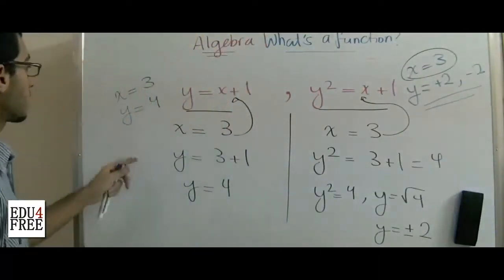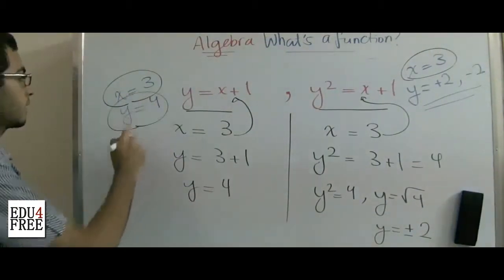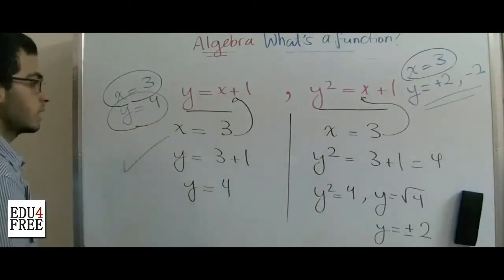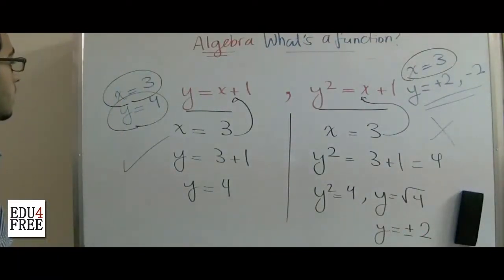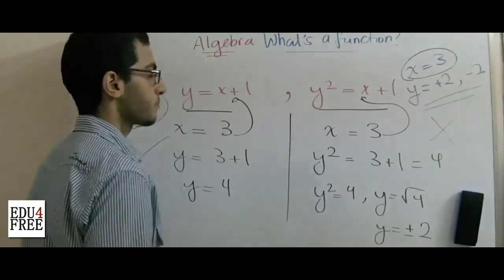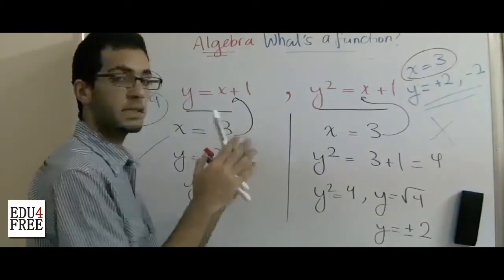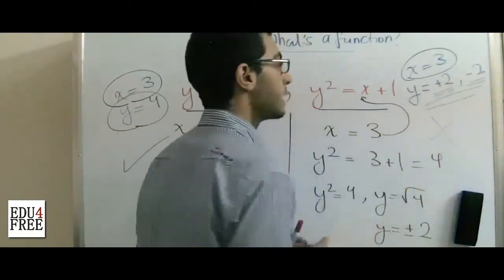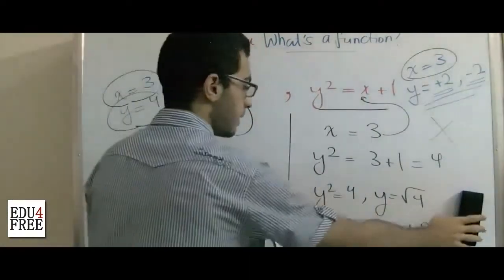In the first equation we have one value of x and only one value of y — this is called a function. In the second equation we get two values of y for one value of x — this is not a function. So when we substitute with x and get two values of y, this is not a function.